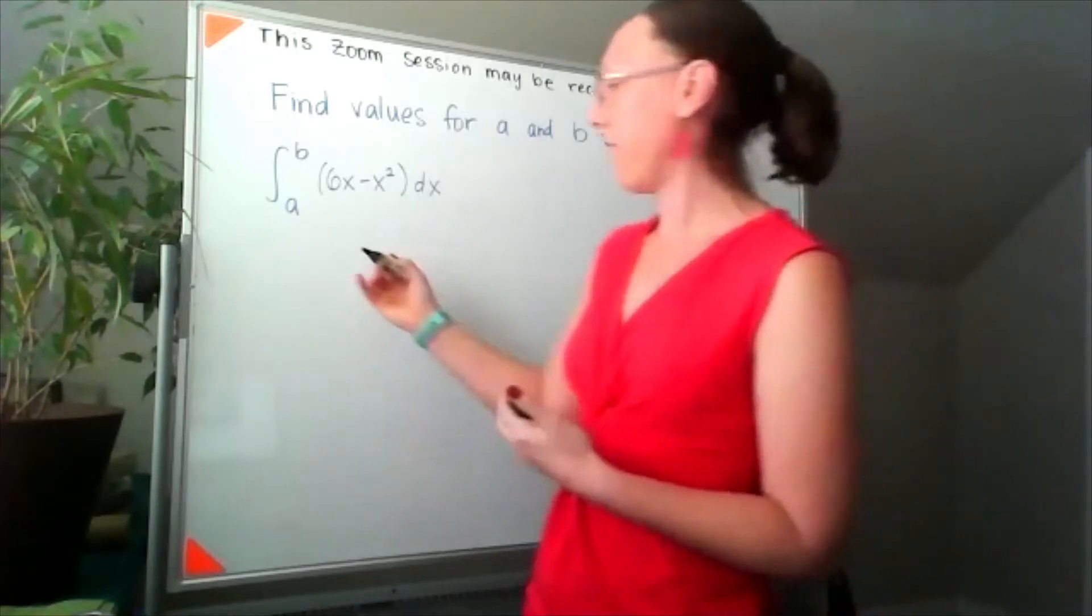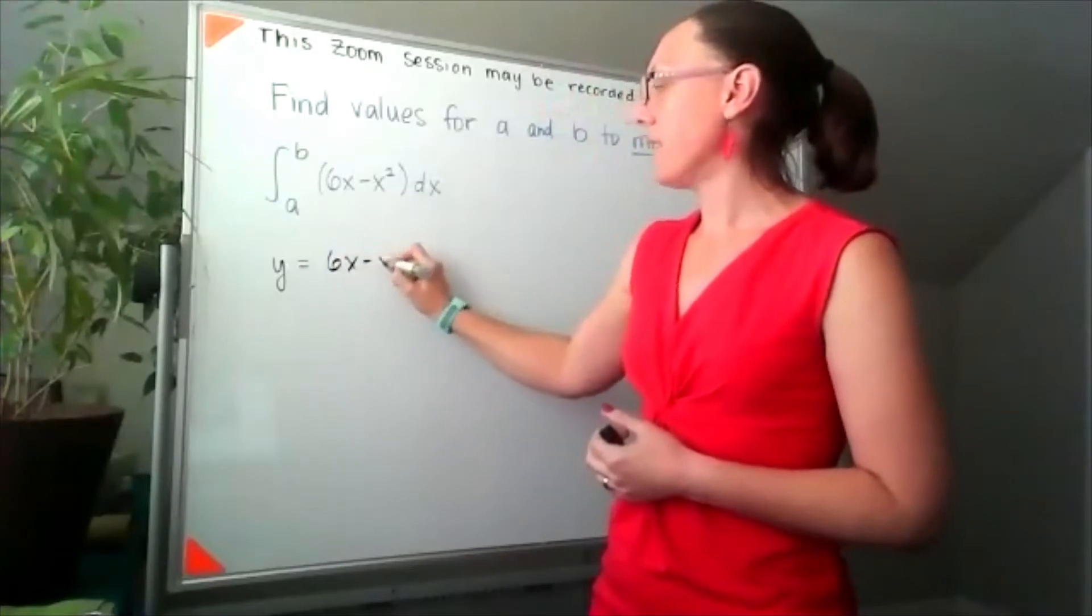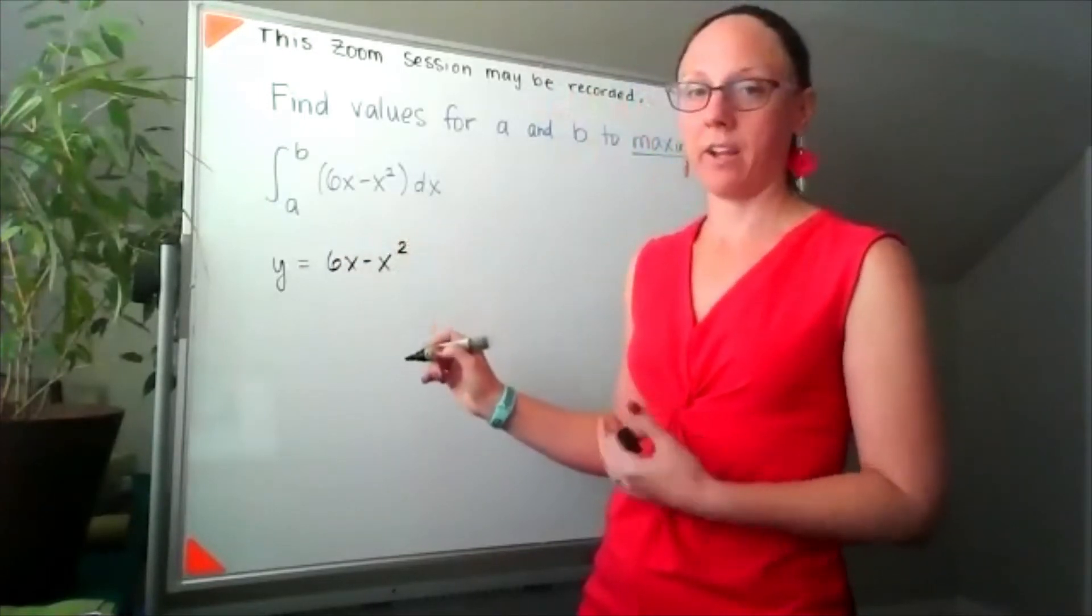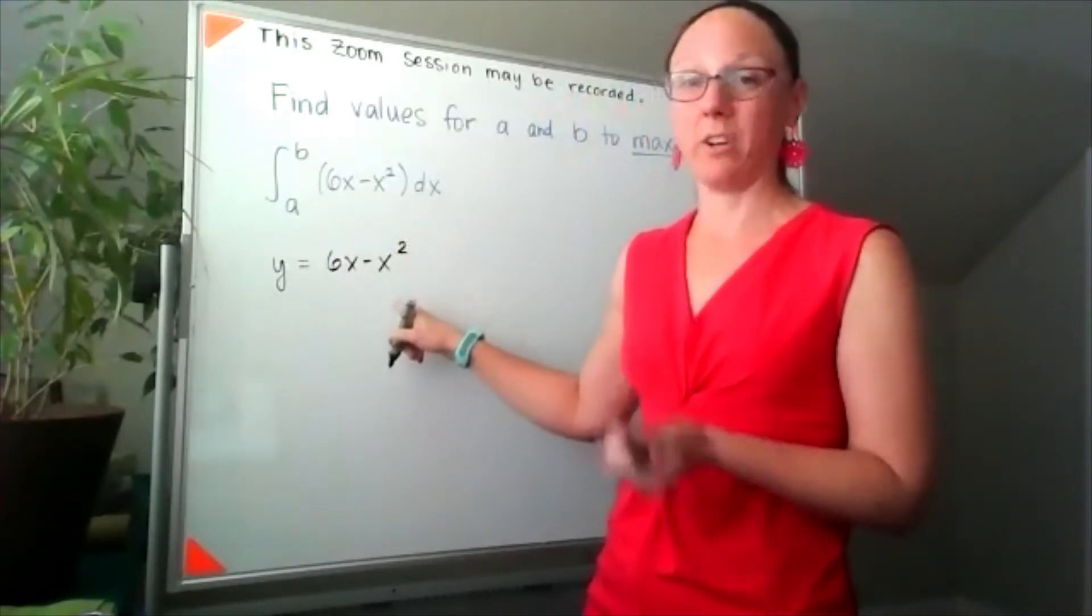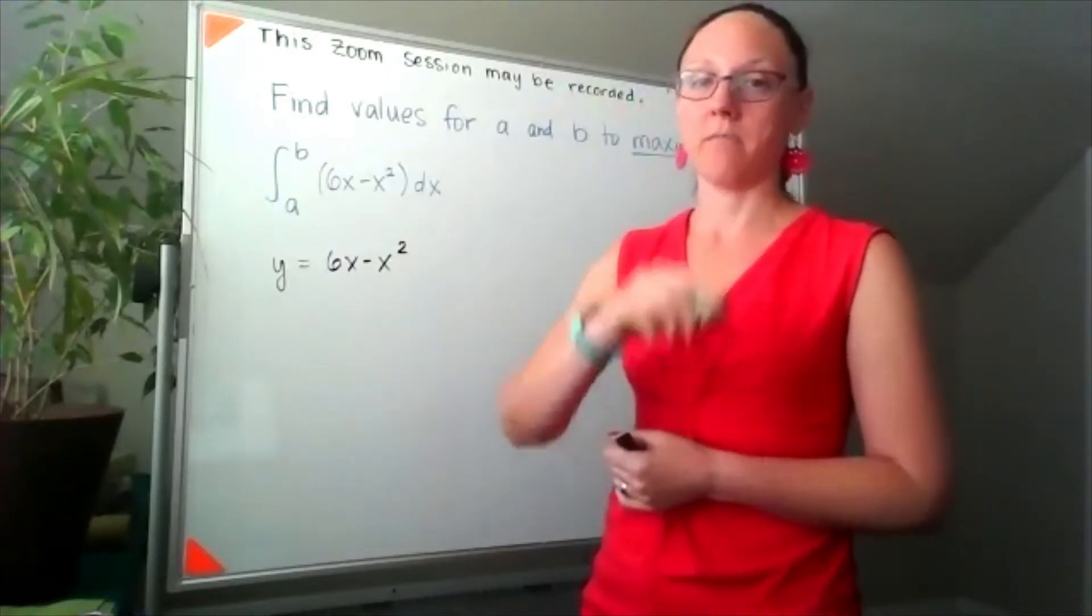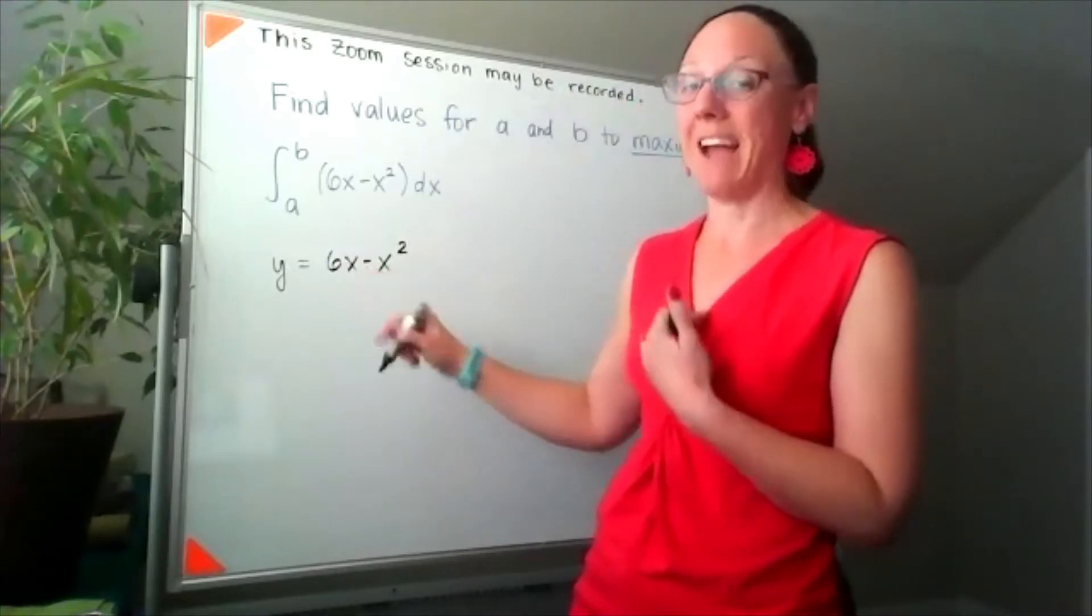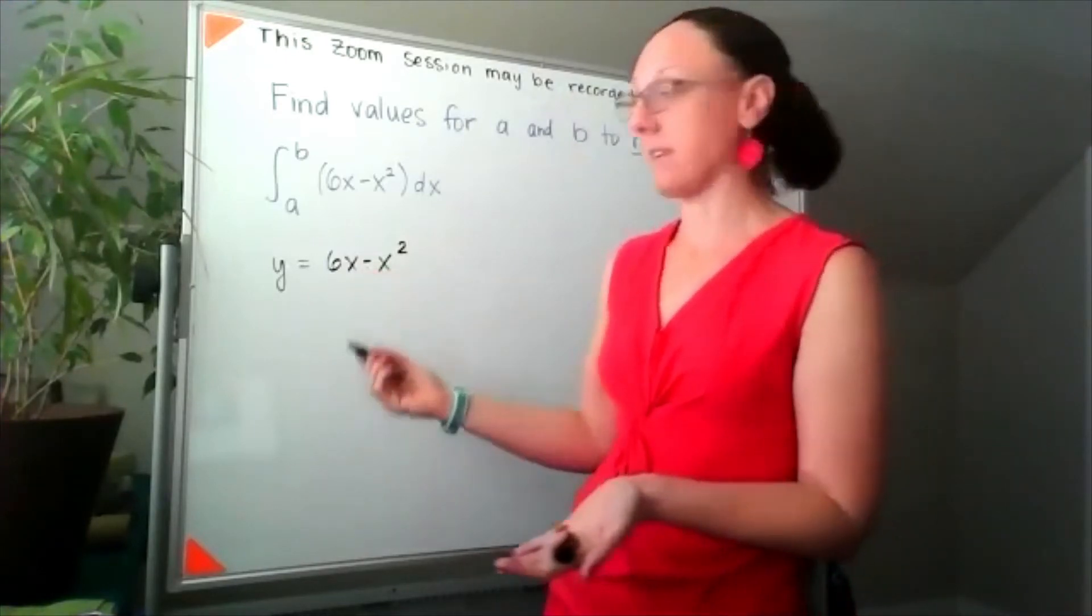If I have y equals 6x minus x squared, I know it's a parabola because I've got an x squared. I know that it's a concave down parabola because of the minus sign in front of the x squared, and if I had to graph it, I would factor an x out.